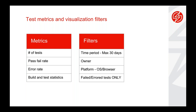The filters we have are: time period, which lets you go from the last 30 days to about the last five seconds; owner, which lets you look at different teams or a specific owner within the team depending on your access permissions; platform, segregated between operating systems and browsers as well as simulators and emulators; and through the build and test statistics table, to make troubleshooting easier, we have a quick filter that allows users to filter by failed test or error test only. I'm going to show all of this to you very shortly, so stay tuned.